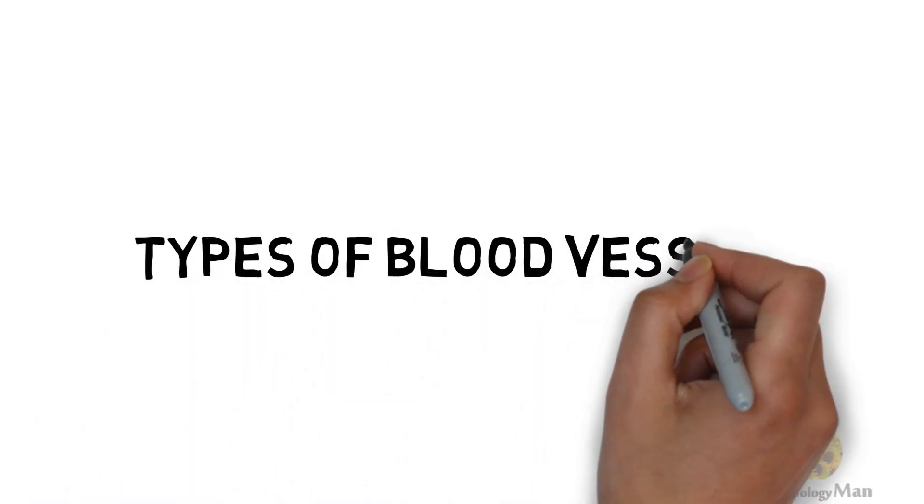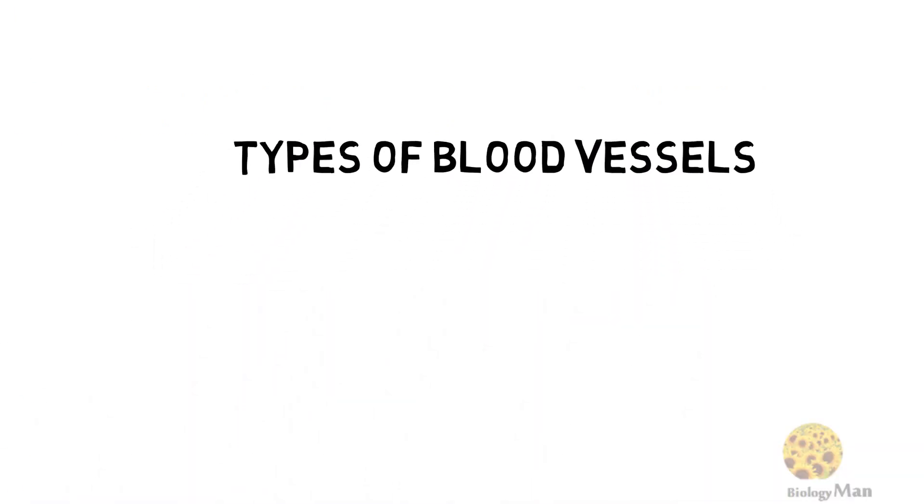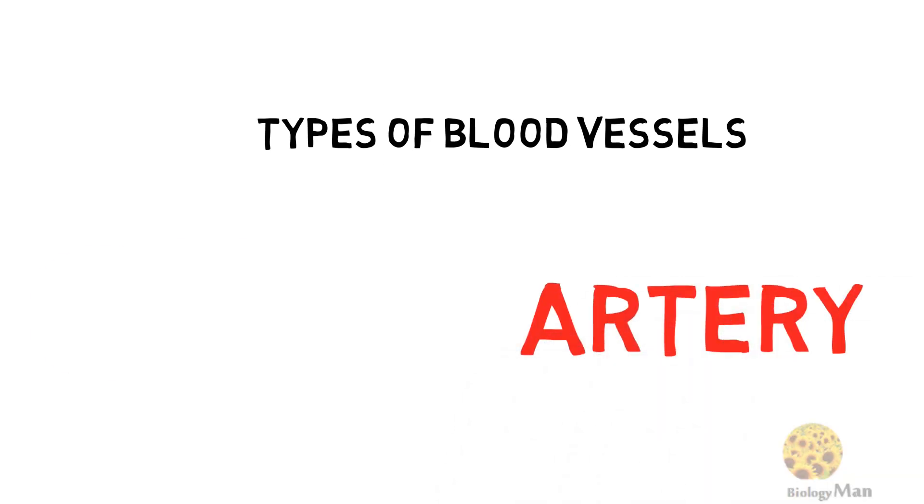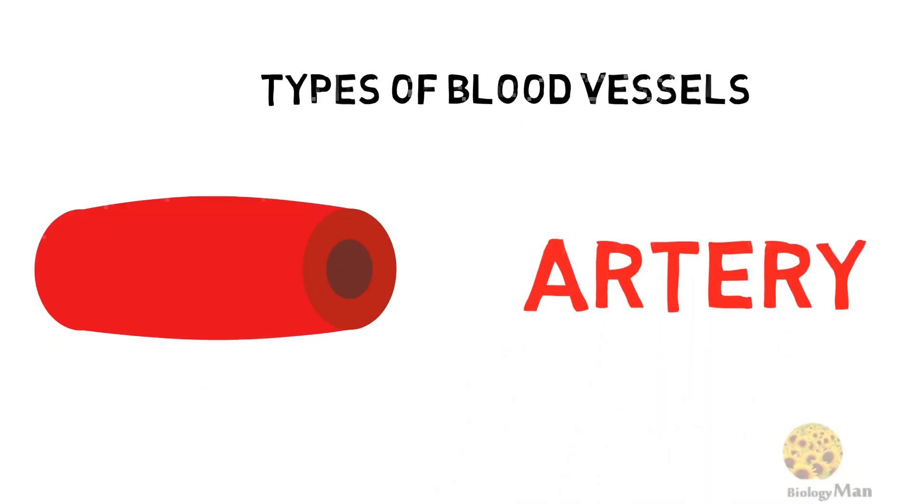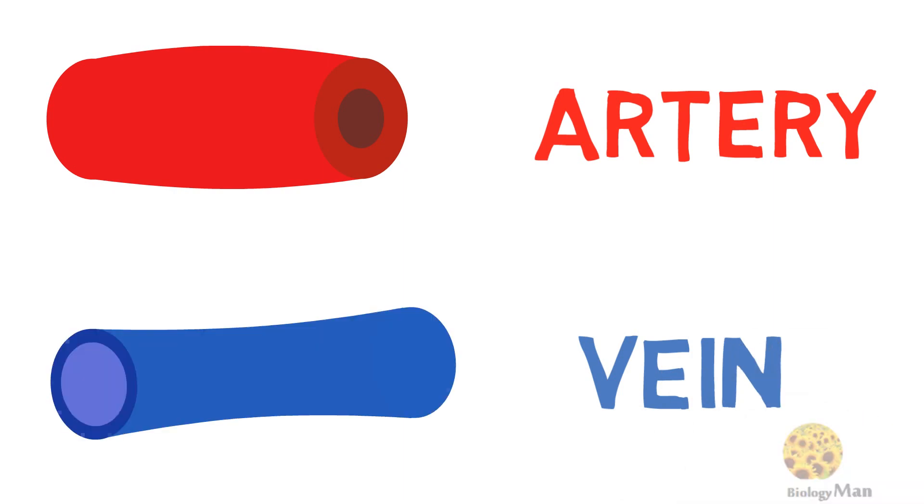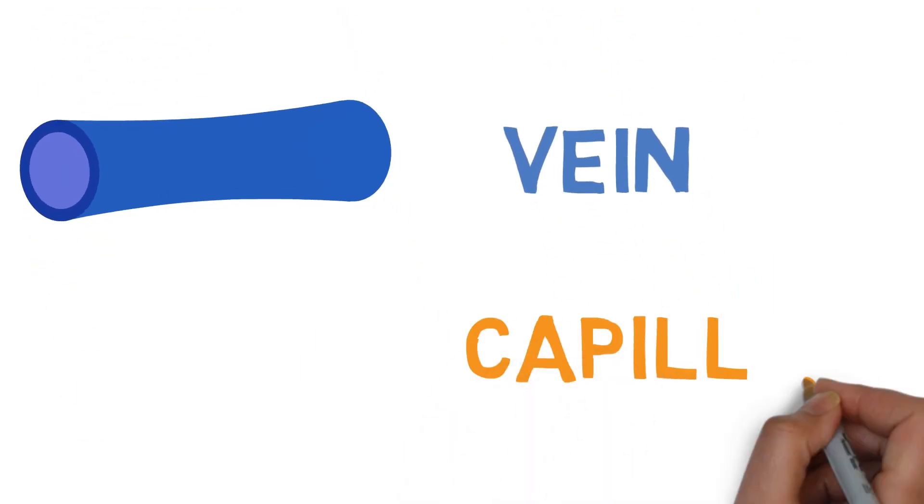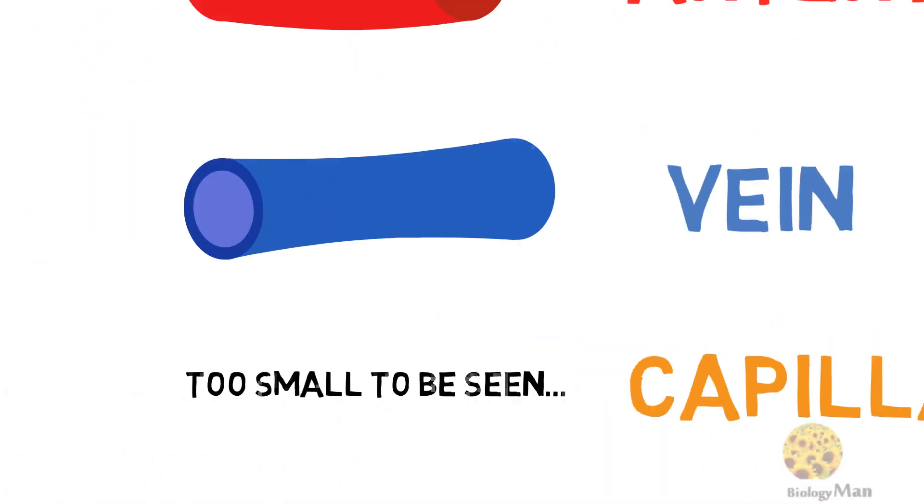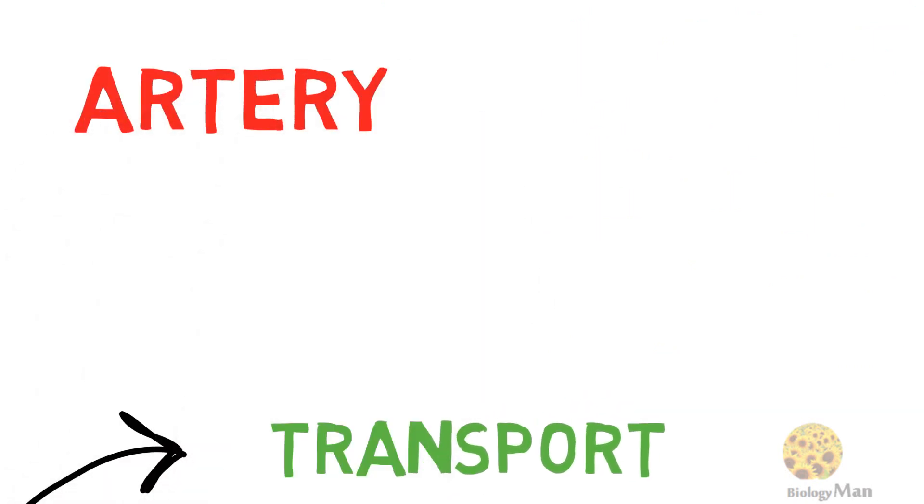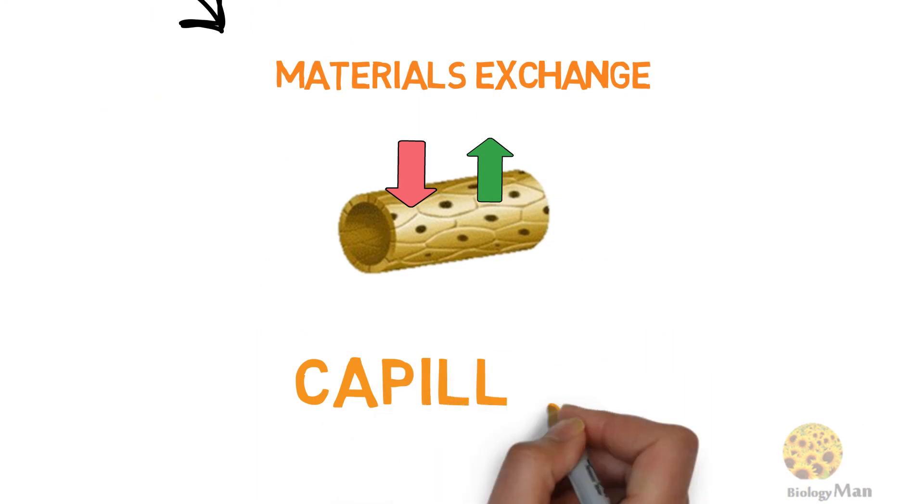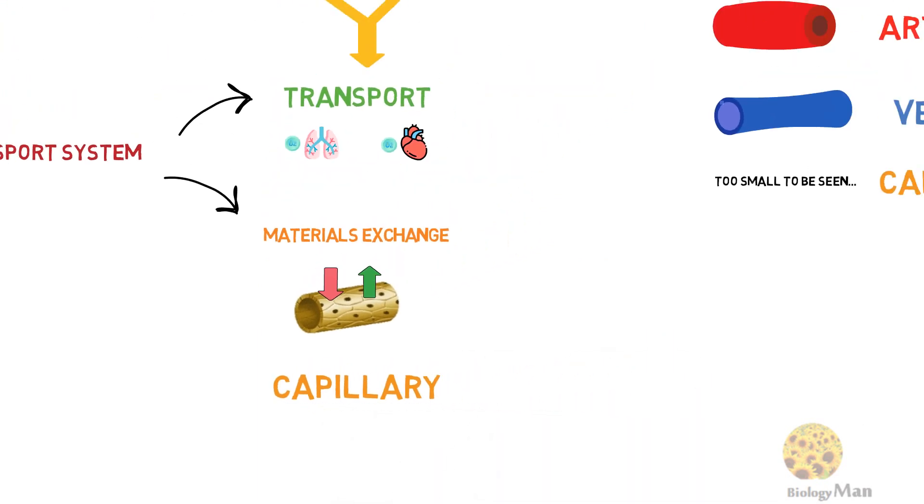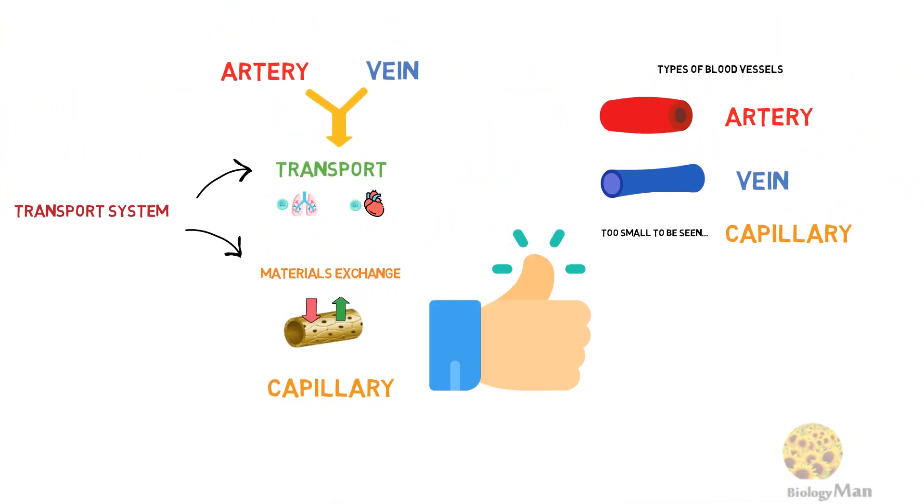There are three types of blood vessels in the human body. Arteries carry blood away from the heart. Veins carry blood back to the heart. Capillaries connect arteries and veins. Arteries and veins are for transport, while capillaries are sites for material exchange. Let's take a look at the artery first.